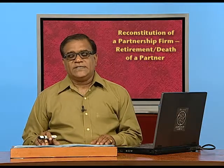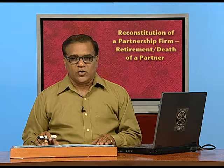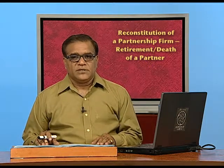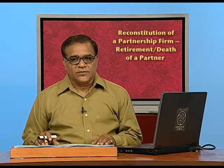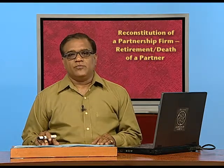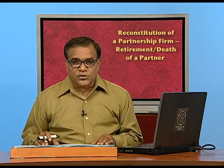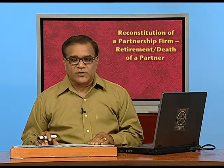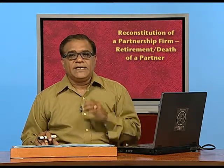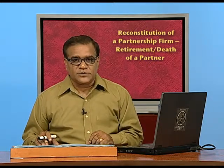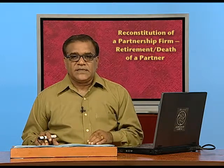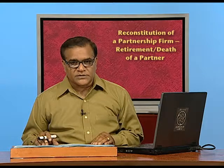The next point is how to adjust the partner capital account in case of retirement or death. First: if the capital of remaining partners is given in the question, it should be written on the balance carried down side on the debit side. If your actual capital is less than that, you will have to bring the money in. If your capital is more, you will be paid back the extra amount. For example, if my capital is 30,000 and I require 50,000, I will bring in 20,000. But if my existing capital is 60,000 and we want it at 50,000, I will be paid back the excess 10,000.